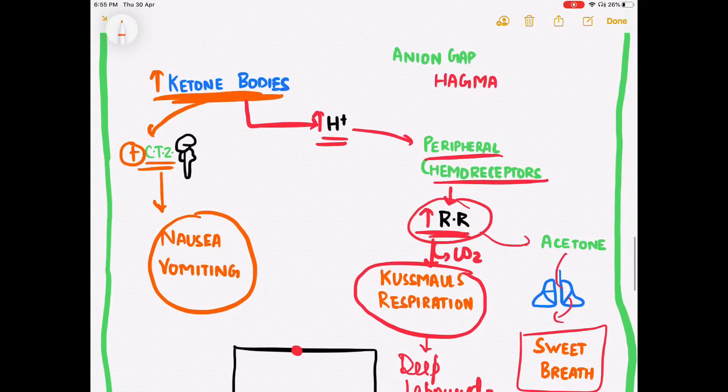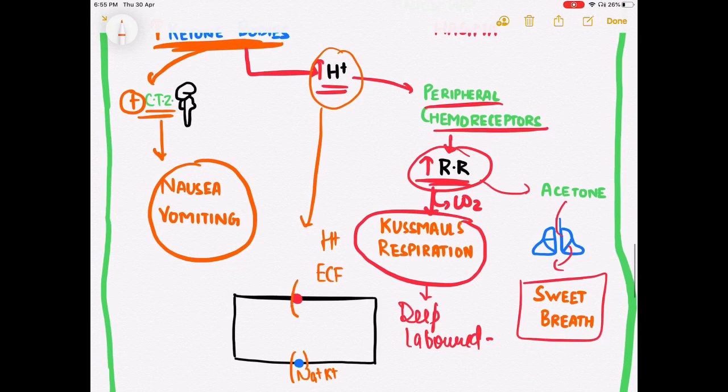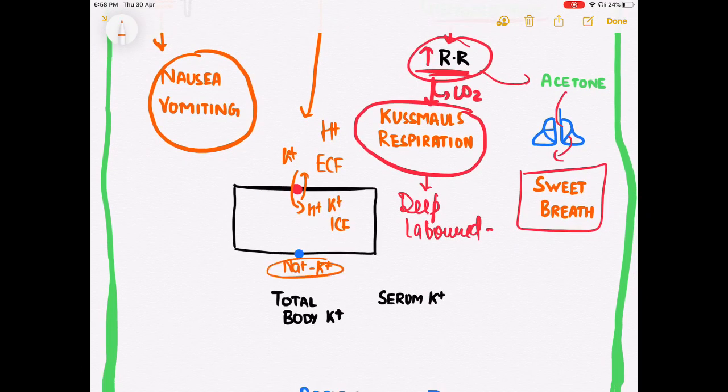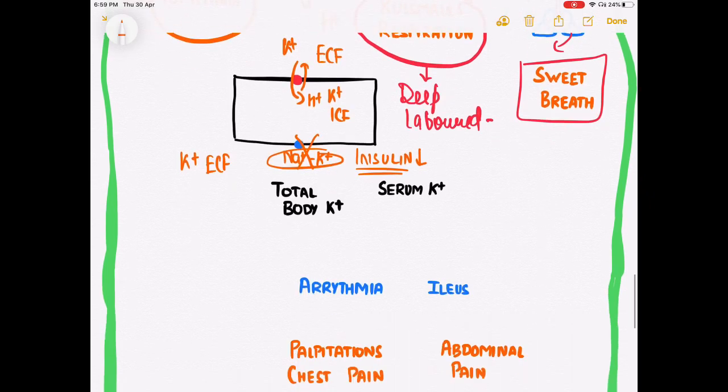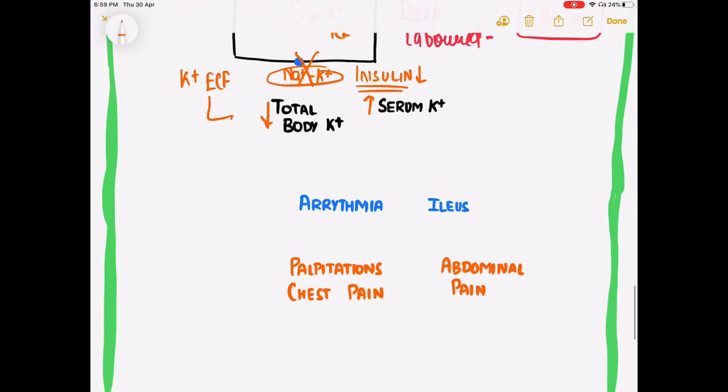Due to excess proton generation due to ketone bodies, there is increased concentration of H+ ions in the extracellular fluid. More H+ ions are pumped into the cell by this pump, and as a result, K+ ions present in the intracellular fluid are driven out of the cell. Another pump present here is the sodium-potassium ATPase pump. The working of this pump is dependent on insulin availability. Since there is less insulin present, there is blocking of the sodium-potassium pump, so more potassium remains in the extracellular fluid. This leads to reduction in total body potassium and there is an increase in serum potassium.